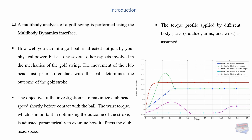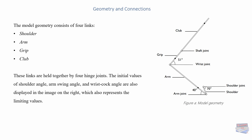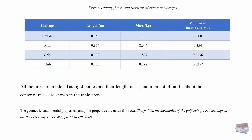We are going to assume that the torque profile is applied by different bodies. Here we have our geometry and connections. Our geometry consists of a club, grip, arm, and shoulder. These links are held together by hinge joints. Here is our table that shows all the links — they are all modeled as rigid bodies. All files needed for this tutorial are provided in the link in the description below.